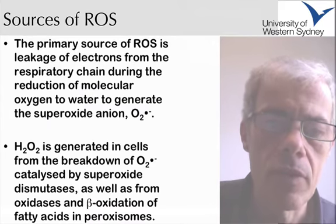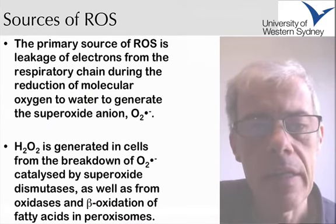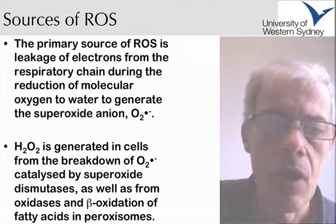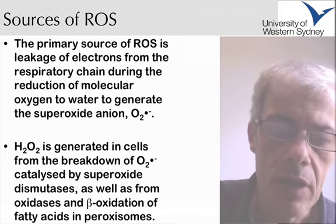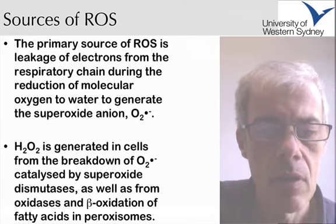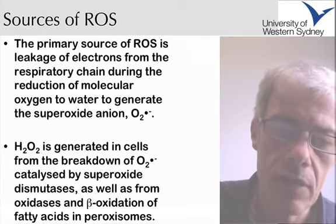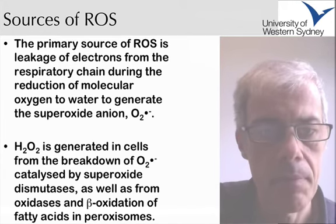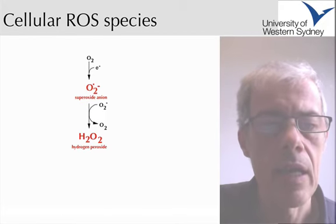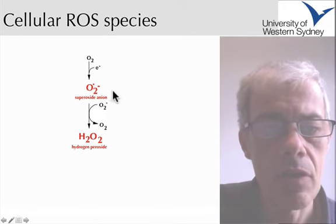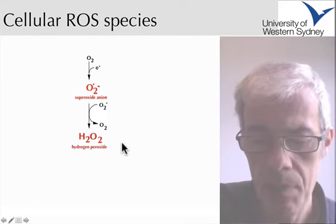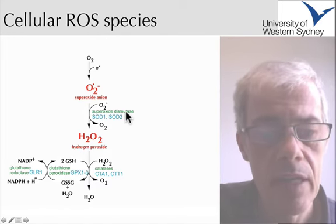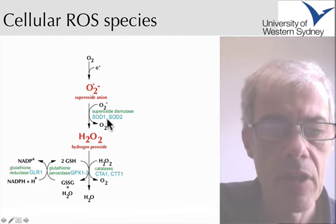Another source of reactive oxygen species in the cell is the leakage of electrons during the electron transport chain. During the reduction of molecular oxygen to water, you can get the release of superoxide. Superoxide can then be converted to other reactive oxygen species within the cell, such as hydrogen peroxide and the hydroxyl radical. This conversion occurs due to an enzyme called superoxide dismutase, which helps to remove these damaging compounds.